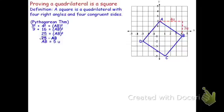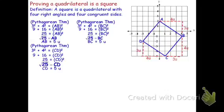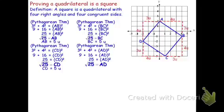Now that's the length of one of the segments. In order to show that all four segments are congruent, I'm going to have to do this three more times — for BC, CD, and AD. There are other ways to do it. You could do Pythagorean theorem once for any one of the sides, and then show that the other sides are going to be congruent, because those slope triangles are all congruent to each other by SAS.